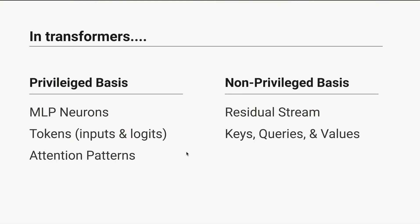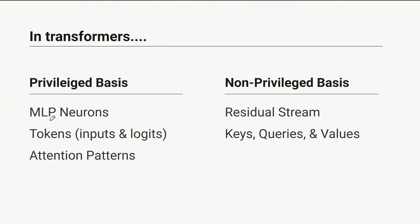So in transformers, which parts have a privileged basis and which parts don't? Well, the MLP neurons have a privileged basis. If you're familiar with the transformer architecture, every block has attention layers and MLP neurons that both branch off from the residual stream. The MLP neurons have a GELU or ReLU activation function on them, and so that's going to cause them to have a privileged basis. They're also higher dimensional than your residual stream, which is actually an extra advantage — if there's polysemanticity going on, that makes them extra nice.